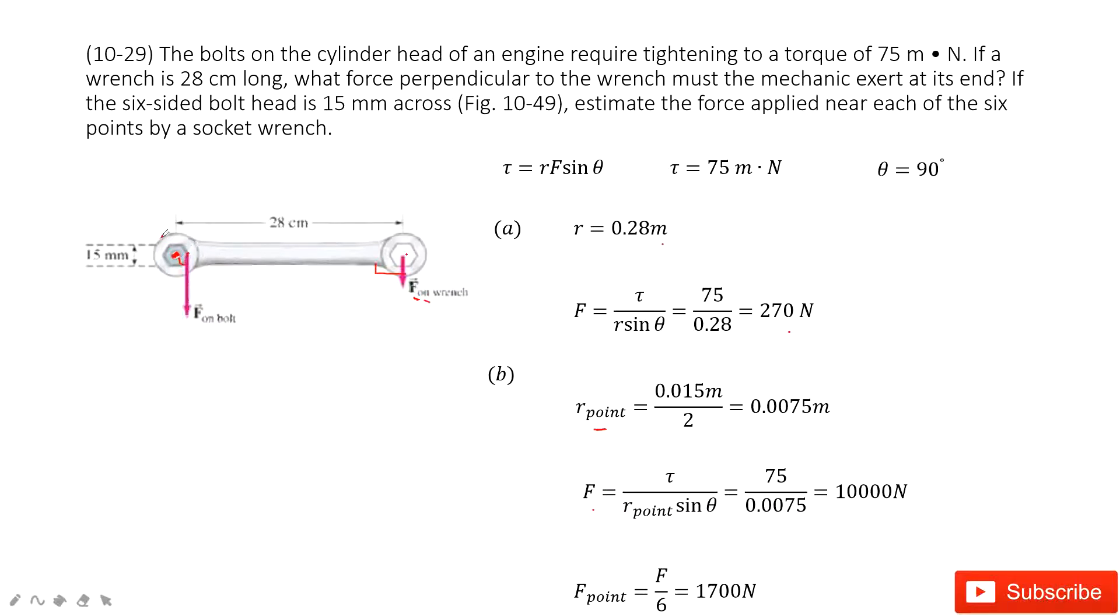Because if you move it, this 6 points move together. So this torque is the sum for this 6 points. The torque is given, the r_point is given, sine theta is given. So you can see this force is very huge. And then, now you divide by 6, it gives the force by each point.